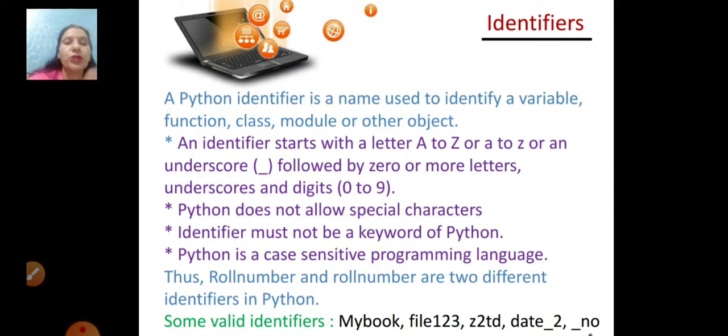So these are the rules which we follow while declaring a variable or an identifier. If we violate these rules, then the identifier or variable is invalid.